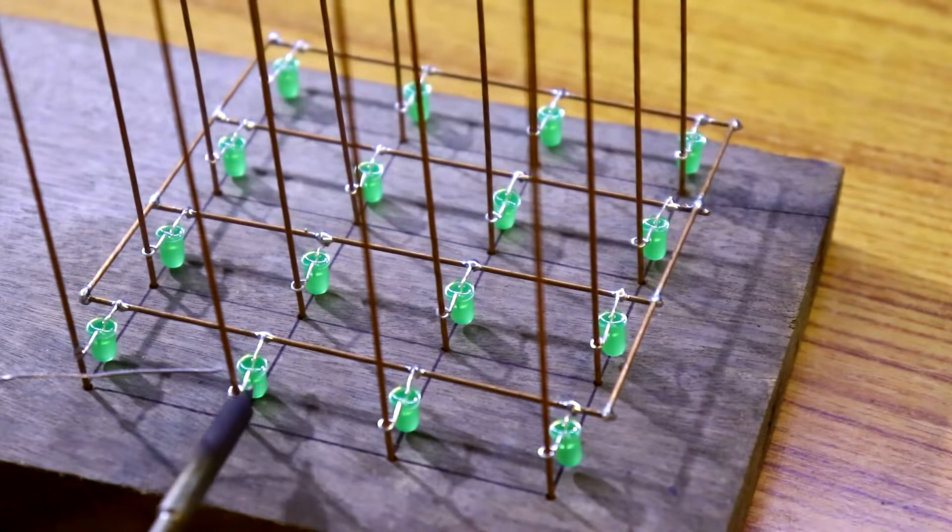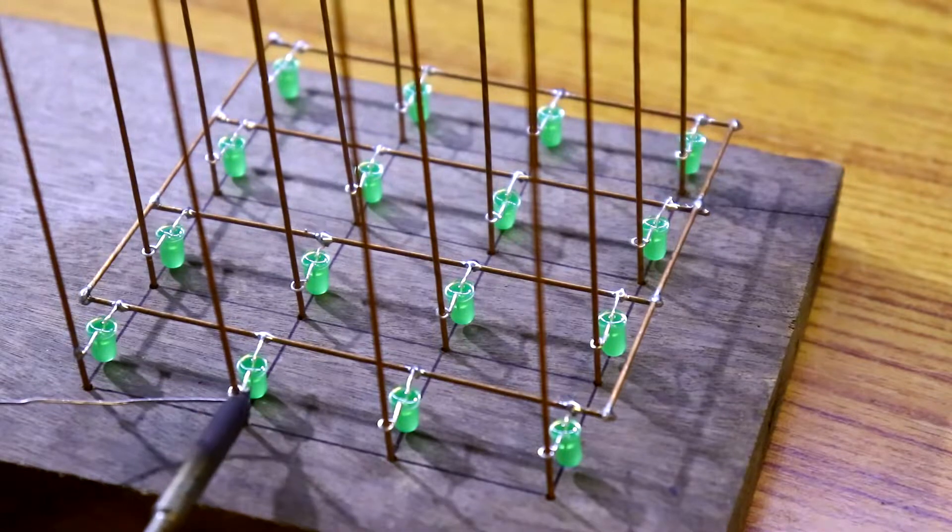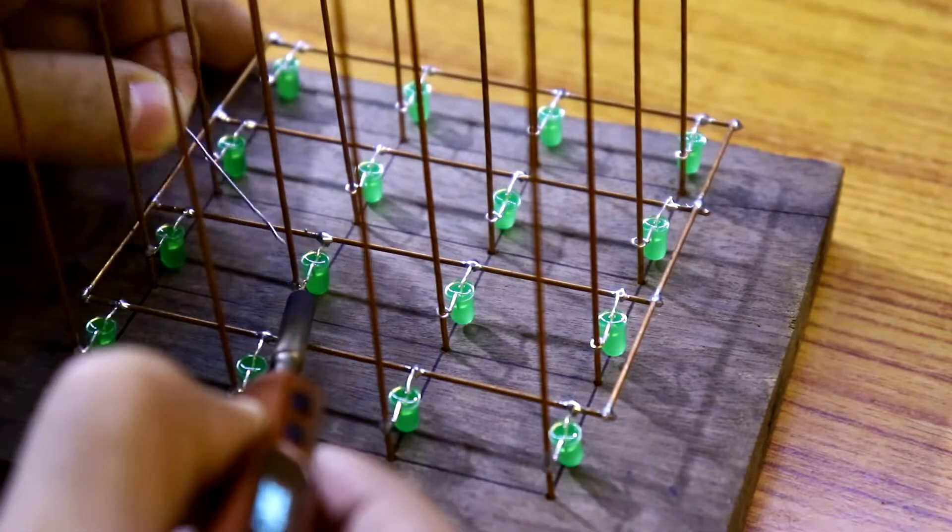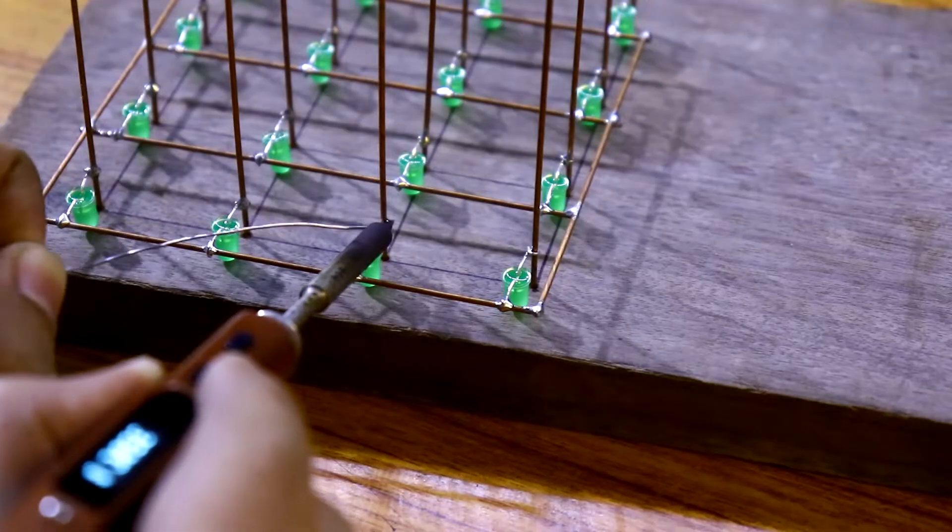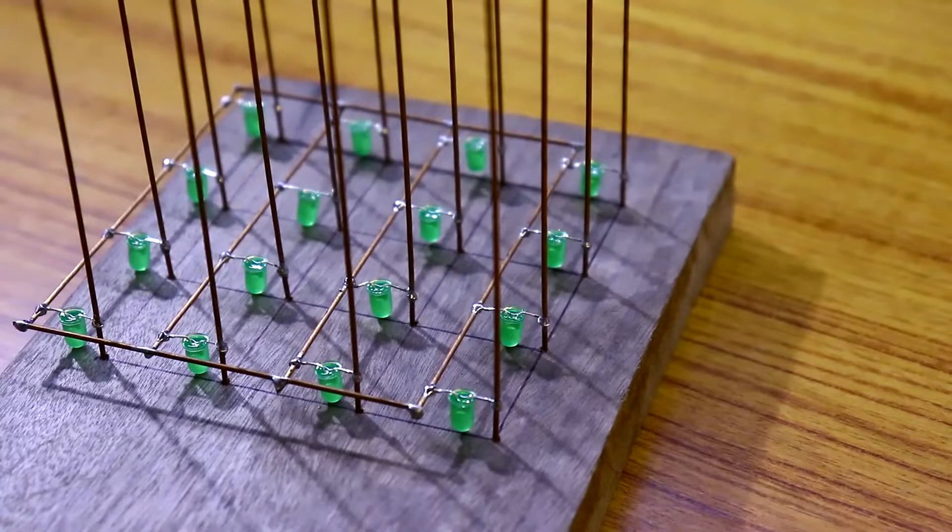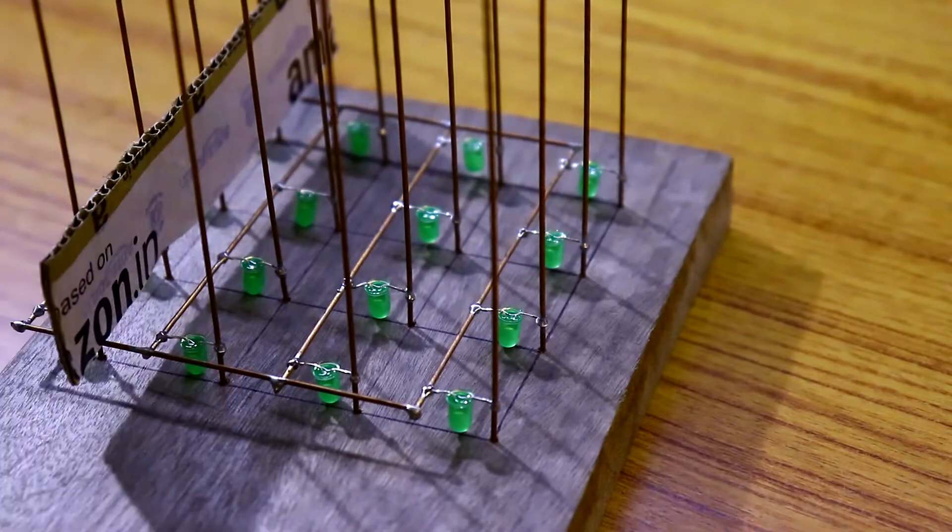Now, I'm soldering the LEDs one by one. Now, put a 3 cm gap in between these two layers.